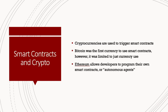So how do smart contracts and crypto go together? Cryptocurrencies are typically used to trigger smart contracts. Bitcoin was the first cryptocurrency to use smart contracts, but it is limited to just currency use. Ethereum saw this and allowed developers to program their own smart contracts, or autonomous agents. So Ethereum took Bitcoin's first intended use a bit further and now allows developers to build programs that utilize smart contracts.